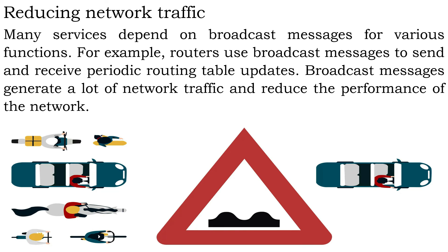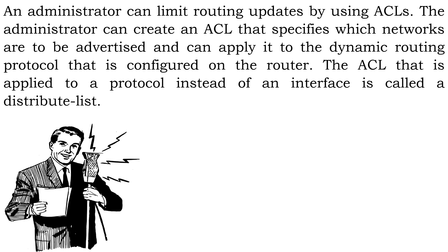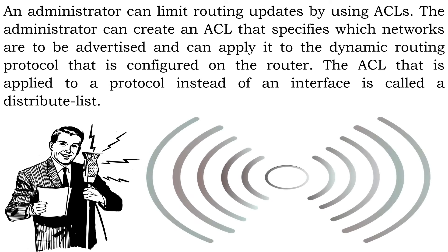Reducing network traffic: many services depend on broadcast messages for various functions. For example, routers use broadcast messages to send and receive periodic routing table updates. Broadcast messages generate a lot of network traffic and reduce the performance of the network. An administrator can limit routing updates by using ACLs, creating an ACL that specifies which networks are to be advertised and applying it to the dynamic routing protocol configured on the router. The ACL applied to a protocol instead of an interface is called a distribute list.